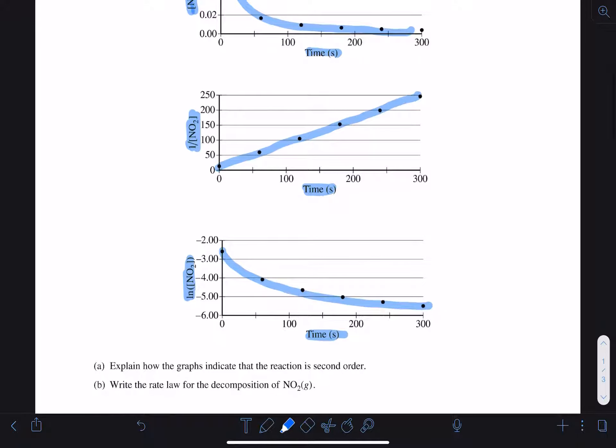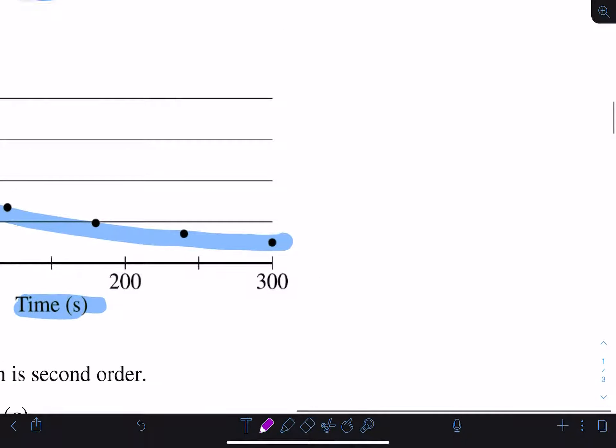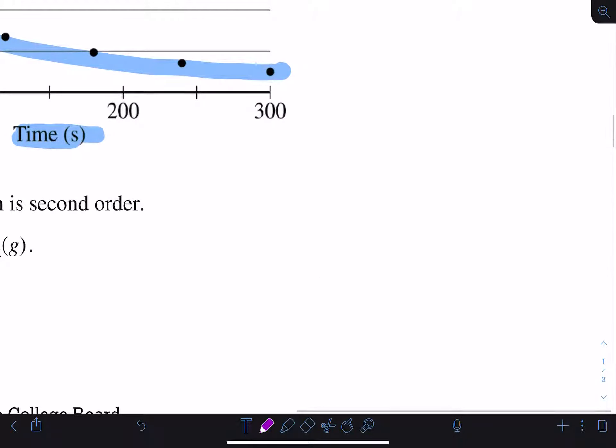The first part of the question asks us to explain how the graphs indicate that the reaction is second order. That's going back again to looking at which one of these produces a linear plot. The inverse of the concentration versus time is the one that is consistent with a second order reaction. We know that this is second order because the plot of 1 over concentration versus time is linear.